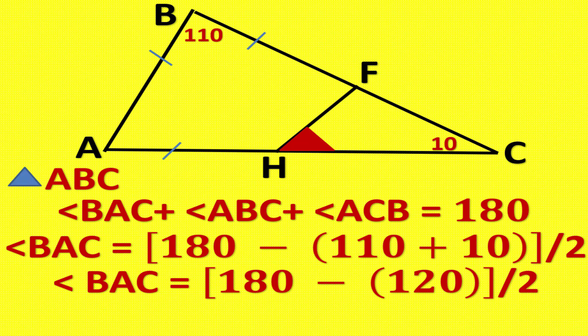Angle BAC equals 180 minus 120 divided by 2. Angle BAC equals 60 degrees.